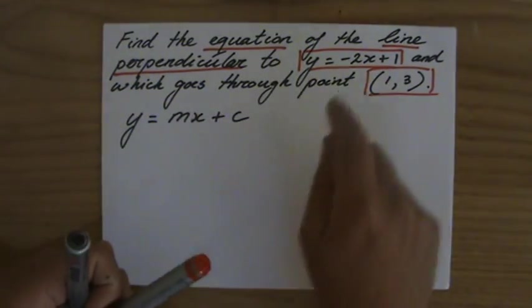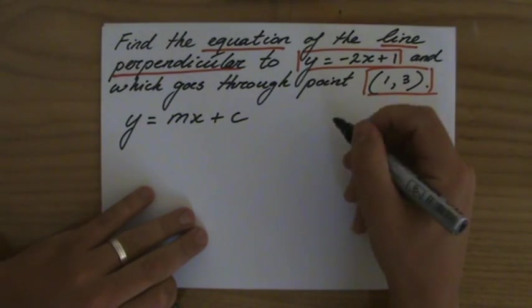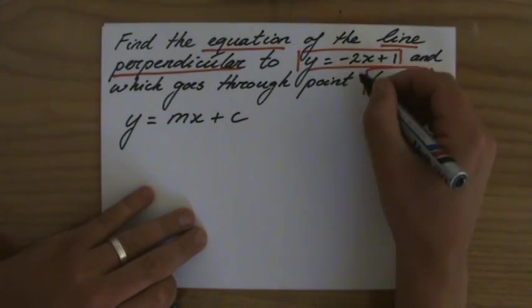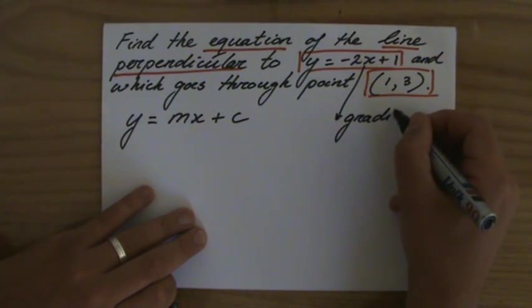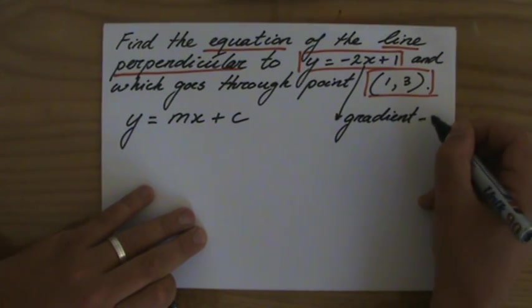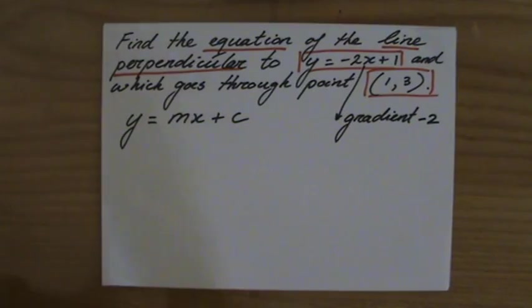So what is the gradient of this line? Minus 2. The gradient is minus 2. This line is going down, one step to the right, two steps down.